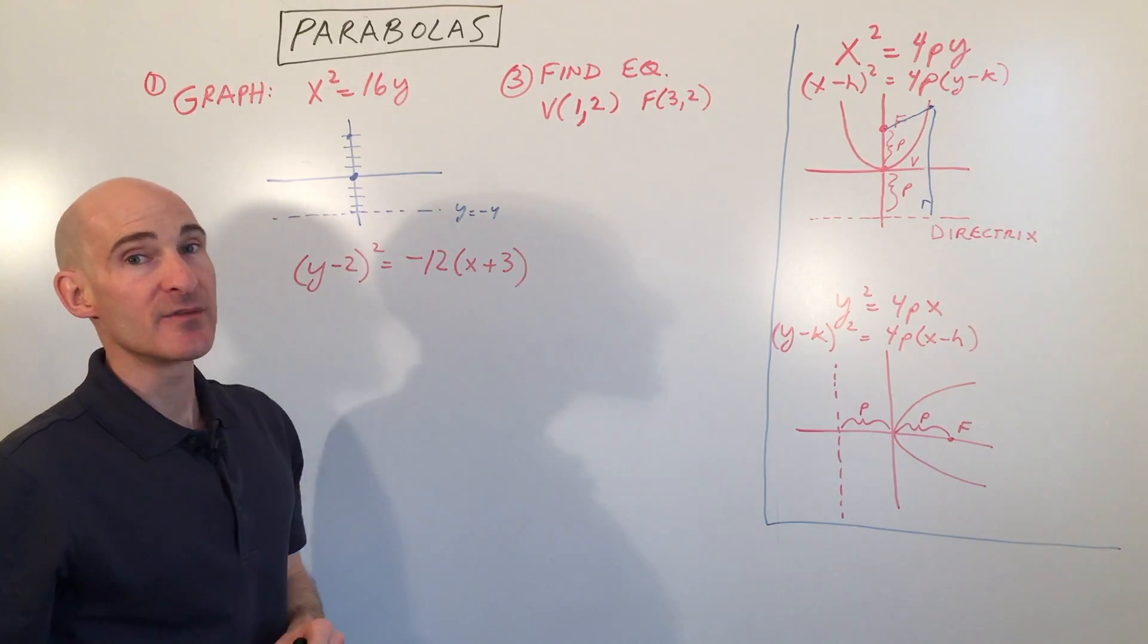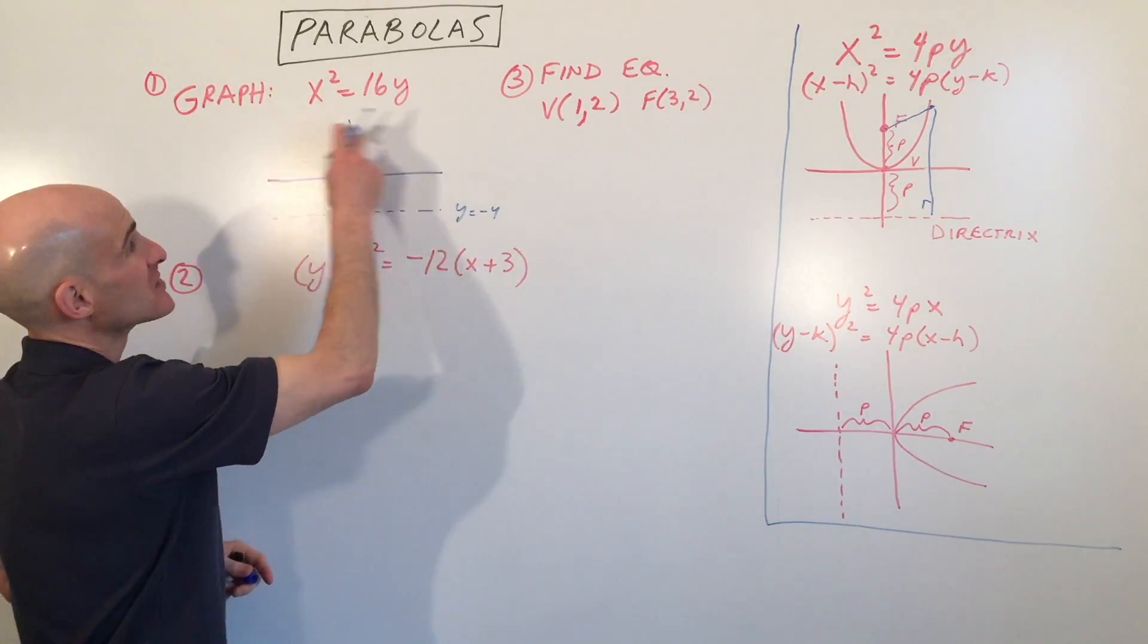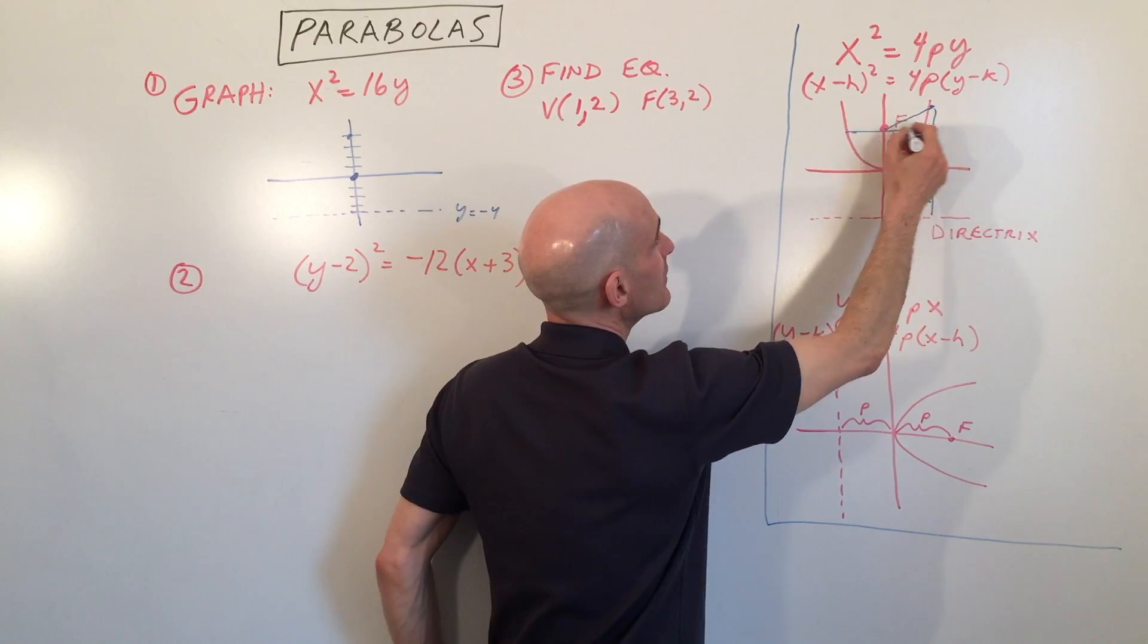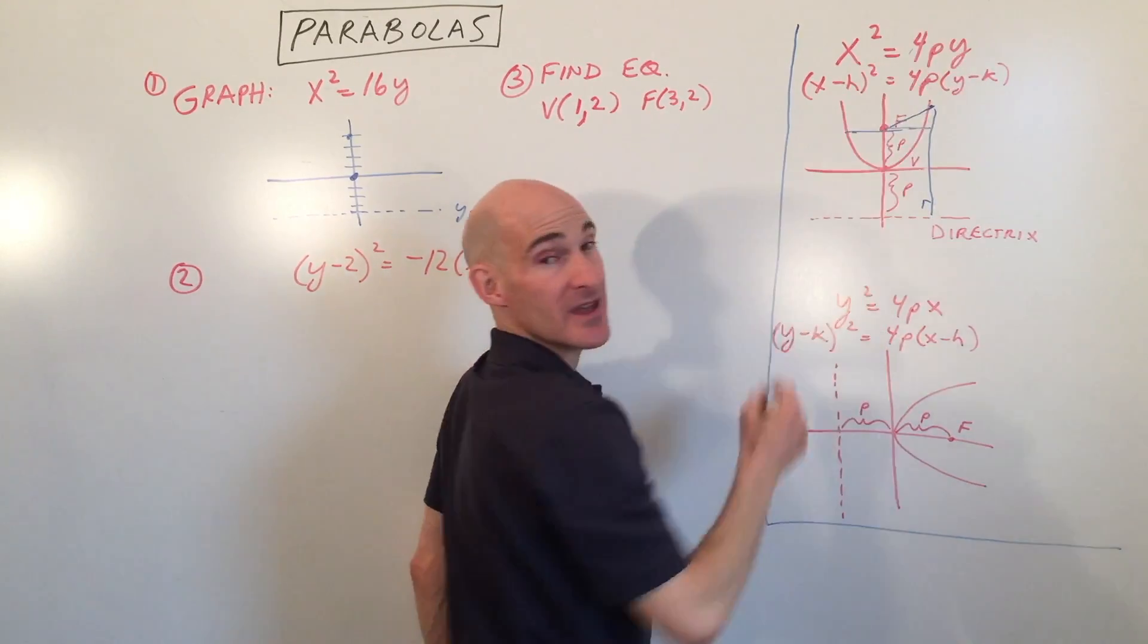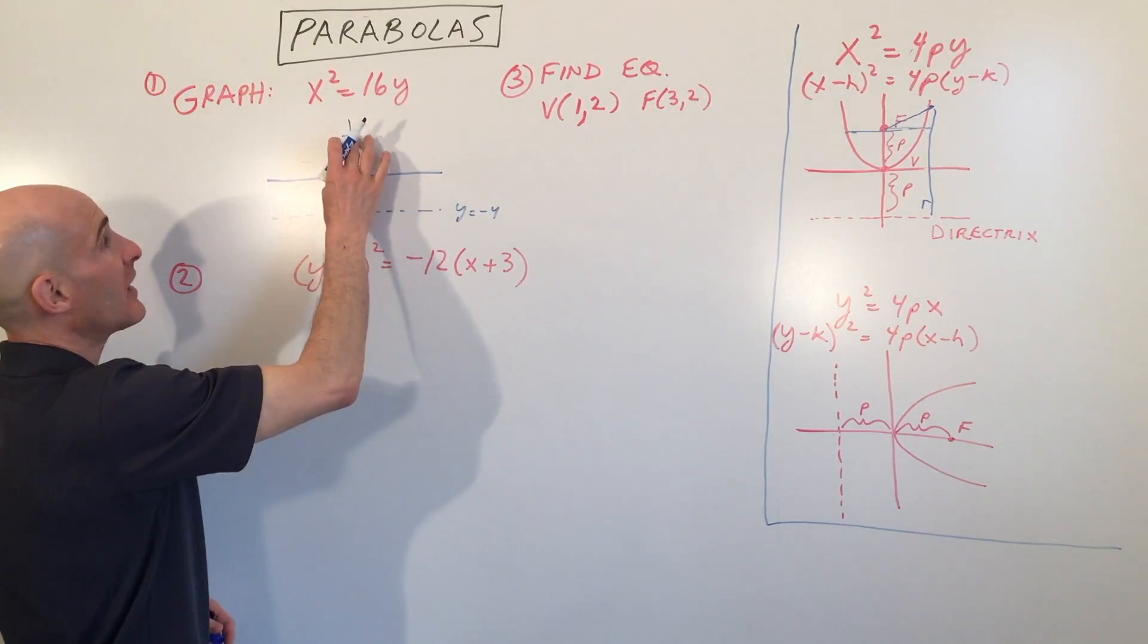Now, another little hint that makes graphing these a lot easier is that at the level of the focus, this width is equal to 4p. Did you catch that?